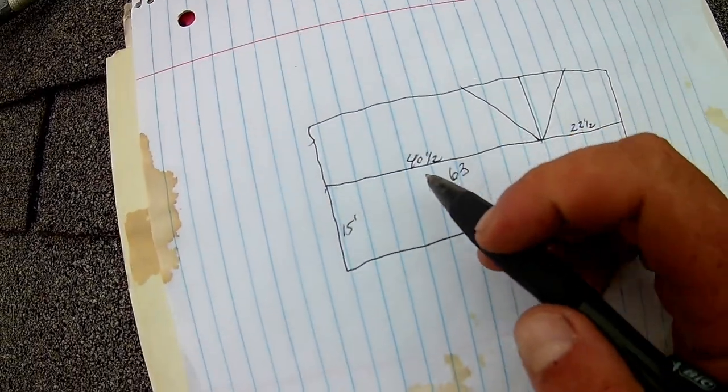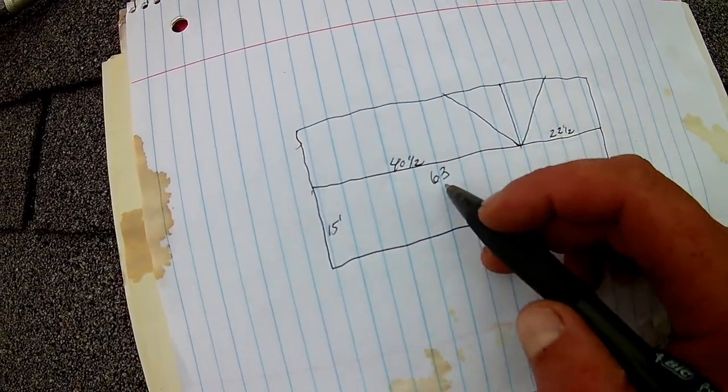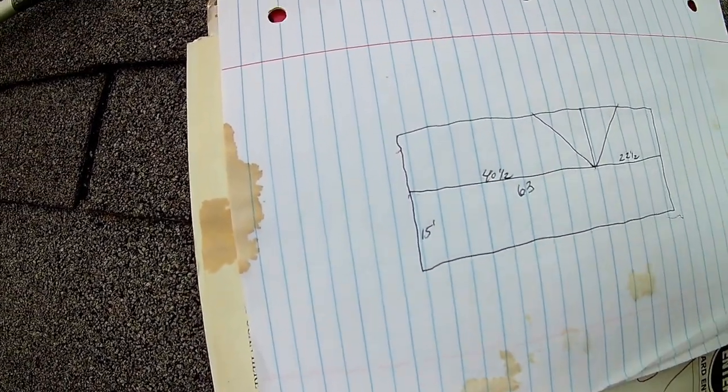And based on this 63 measurement, we can assume that this is going to be 40 and a half. Well, we're not assuming. We know that this is going to be 40 and a half because 40 and a half plus 22 and a half equals 63. So we know that measurement now.